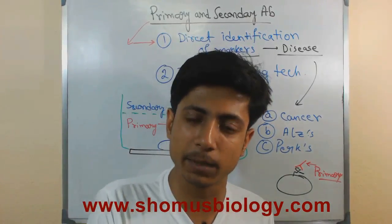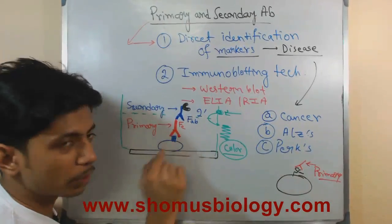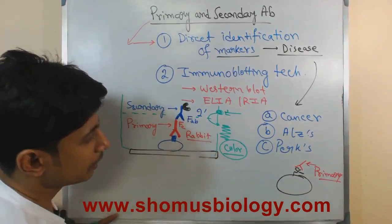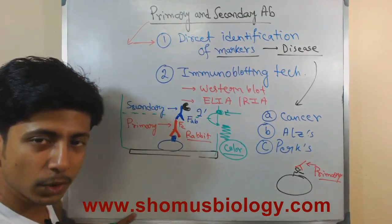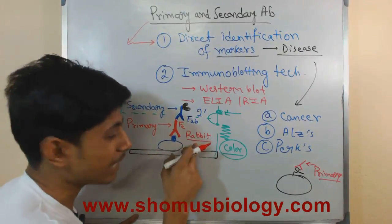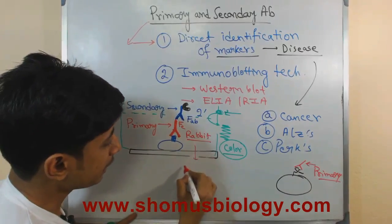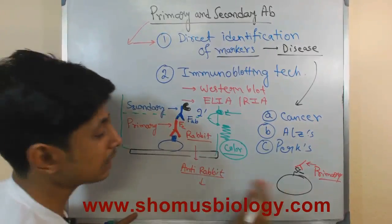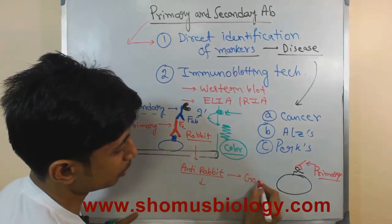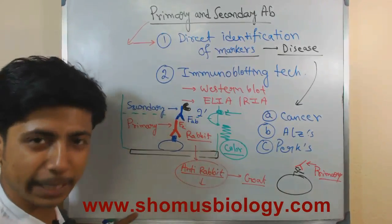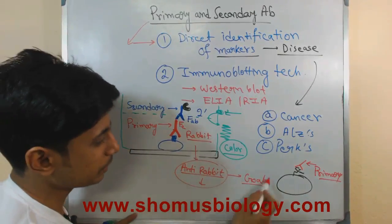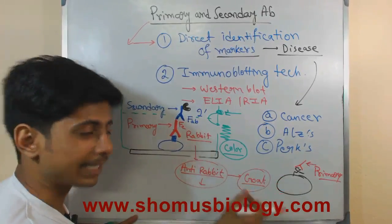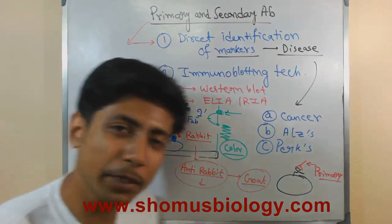The secondary antibody is an anti-primary antibody. For example, if we develop the primary antibody in rabbit, then the secondary antibody will be anti-rabbit, and it should be developed in a different host — for example, goat. You cannot develop an anti-rabbit antibody in a rabbit, so we develop it in goat. The secondary antibody here is developed in goat and is an anti-rabbit antibody.